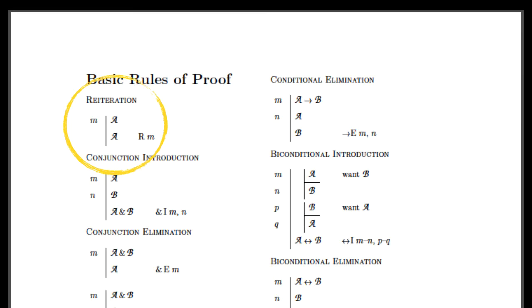Let's start with this ridiculously simple argument: P, therefore P. The simplest rule of proof in our proof system is called reiteration. Here's the listing for it.